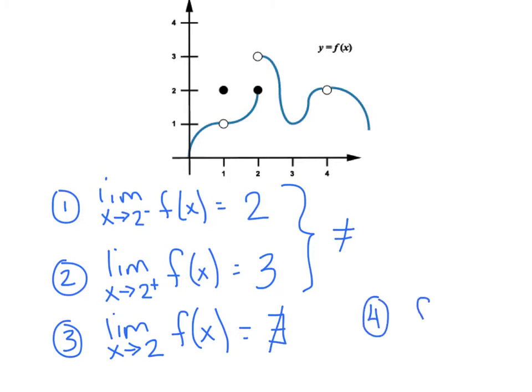And my fourth question would probably be, what is f of 2? And that's the one and only time you look for the closed dot, and we would go right there and we'd say that guy's equal to 2.